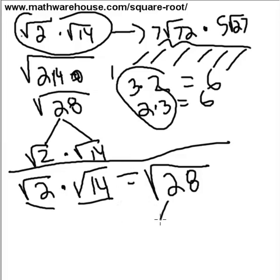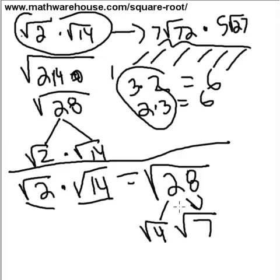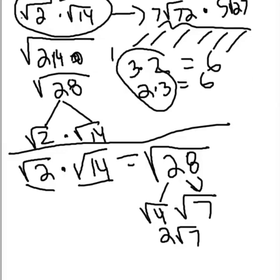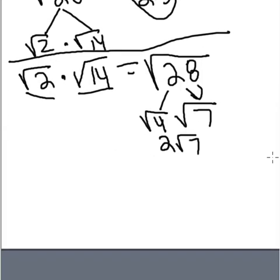Notice that root 2 and root 14 individually can't be simplified — neither has any perfect squares that can be removed. However, the square root of 28 can be simplified because you can rewrite it as the square root of 4 times the square root of 7. And the square root of 4 is, of course, 2, giving us 2 times the square root of 7. Let's do one more problem like root 2 times root 14 before breaking this down into a general rule.